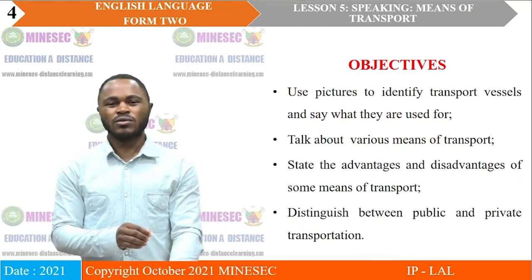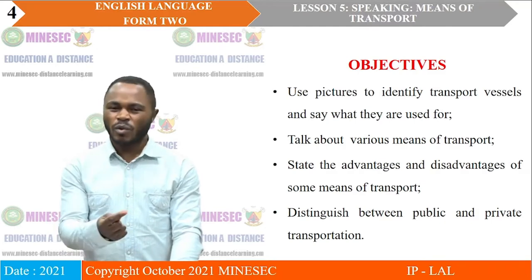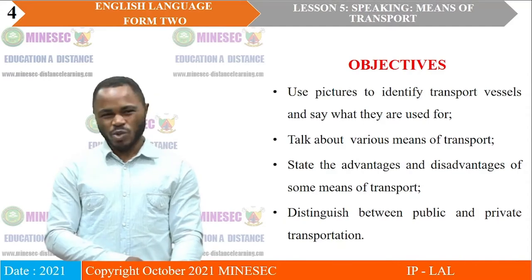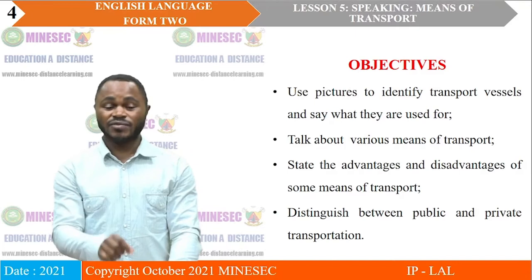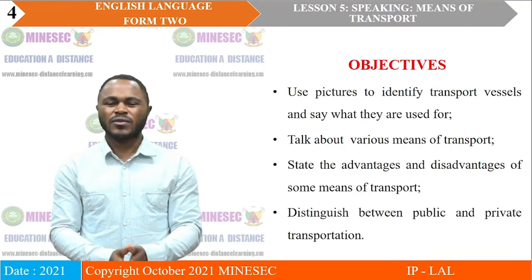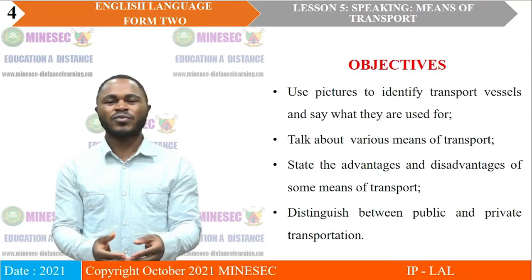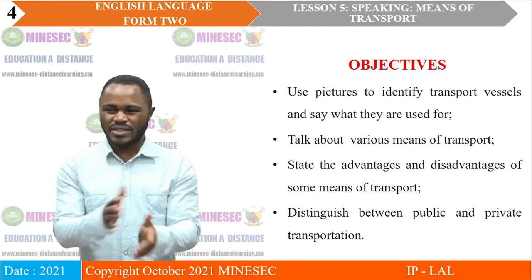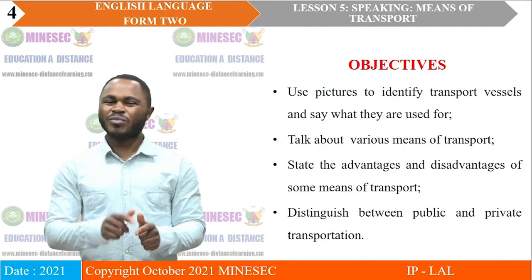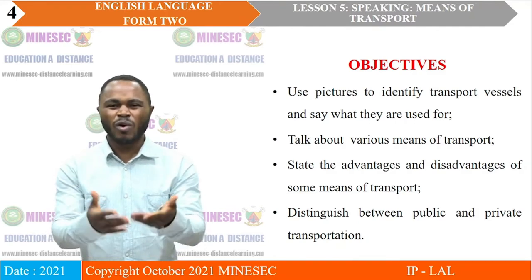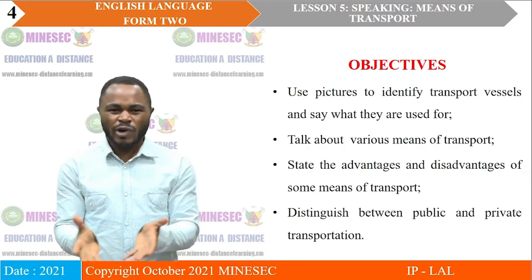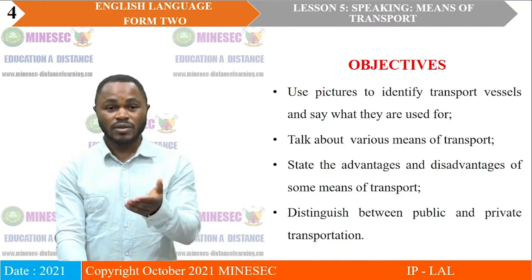What are we going to achieve at the end of this session? Our objectives are: first, to use pictures to identify different transport vehicles and see what they are used for; second, to talk about the various means of transport and classify them; third, to state some of the merits and demerits of using these different means of transport; and lastly, to think about private versus public means of transport and what differentiates these two ways of transportation.